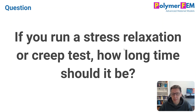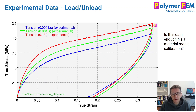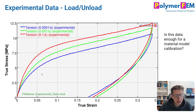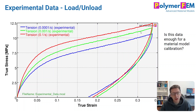I will use some experimental data that I have for an HDPE material and I'm going to explore the use of different times. Here's the data: uniaxial tension at three different strain rates, loading and unloading. This is good data by itself — I can calibrate a viscoplastic material model to it. It has a lot of information that's valuable.